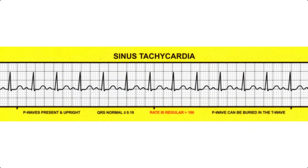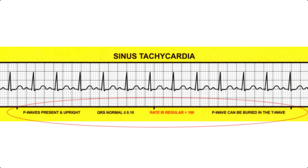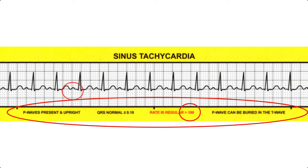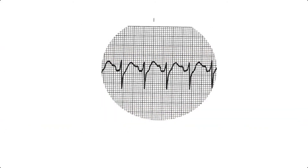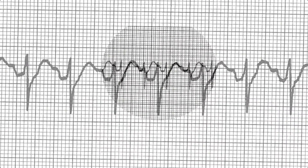In a sinus tachycardia, all the parameters are normal except that the rate of SA node discharge is greater than 100. That rate will generally be between 100 and 160. The P wave is usually visible and normal with a consistent PR interval, but at very high rates the P wave may be partially obscured by the T wave or cause the T wave to appear notched.